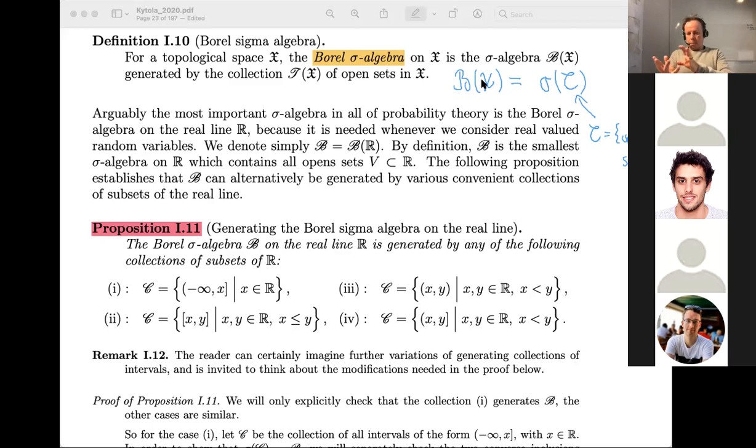It is generated by taking the open sets as the generator or taking the closed sets as the generator. We understand that one sigma algebra can be generated by several different things.